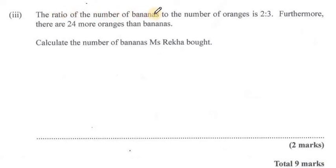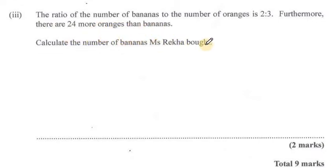The ratio of the number of bananas to the number of oranges is 2 to 3. Furthermore, there are 24 more oranges than bananas. Calculate the number of bananas Ms. Rekker bought.